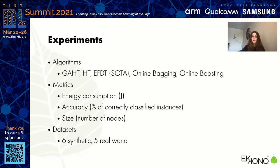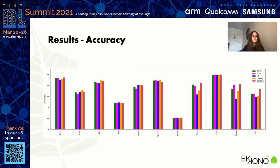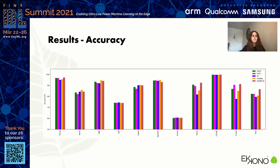What are the results? In terms of accuracy, we are able to achieve significantly better accuracy than the Hoeffding tree — which checks one of our objectives. And we are able to achieve even a little bit higher accuracy than some of the state-of-the-art ensembles. So in terms of accuracy, pretty good.